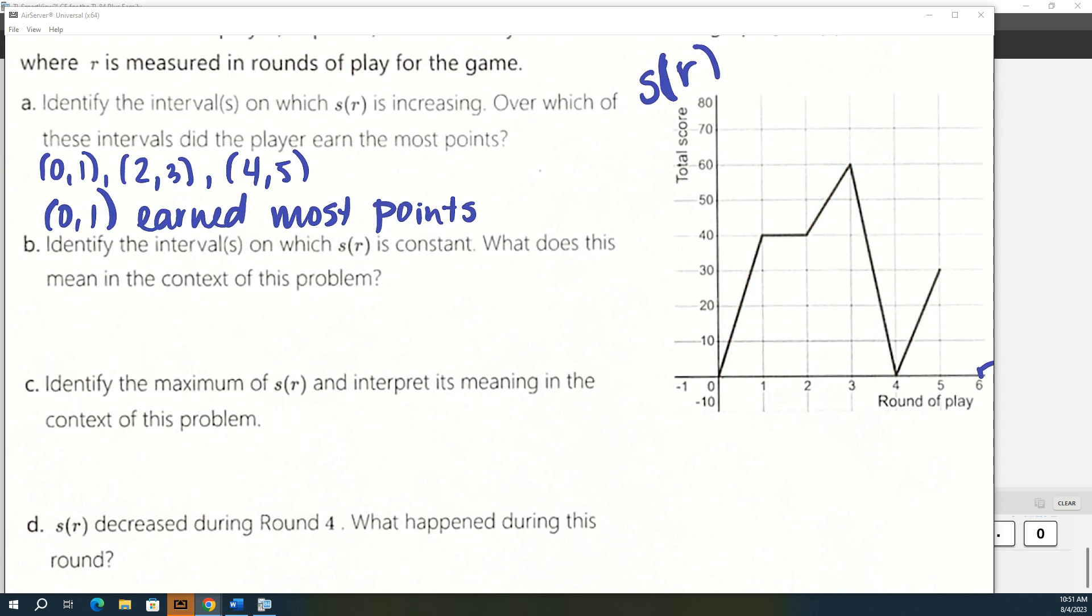Identify the intervals on which S of R is constant, and then what does that mean? So S of R is constant from one to two. What do you think that means? No points on that round. So no points in round two.